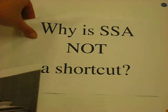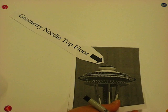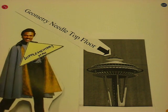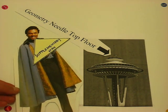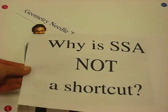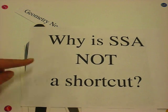It was a dark and stormy night in a city that knows how to keep its secrets. On the top floor of the geometry needle, one man was trying to find the answers to life's persistent questions. Not just one man, Supplementary Man was trying to find out why SSA is not a congruence shortcut.